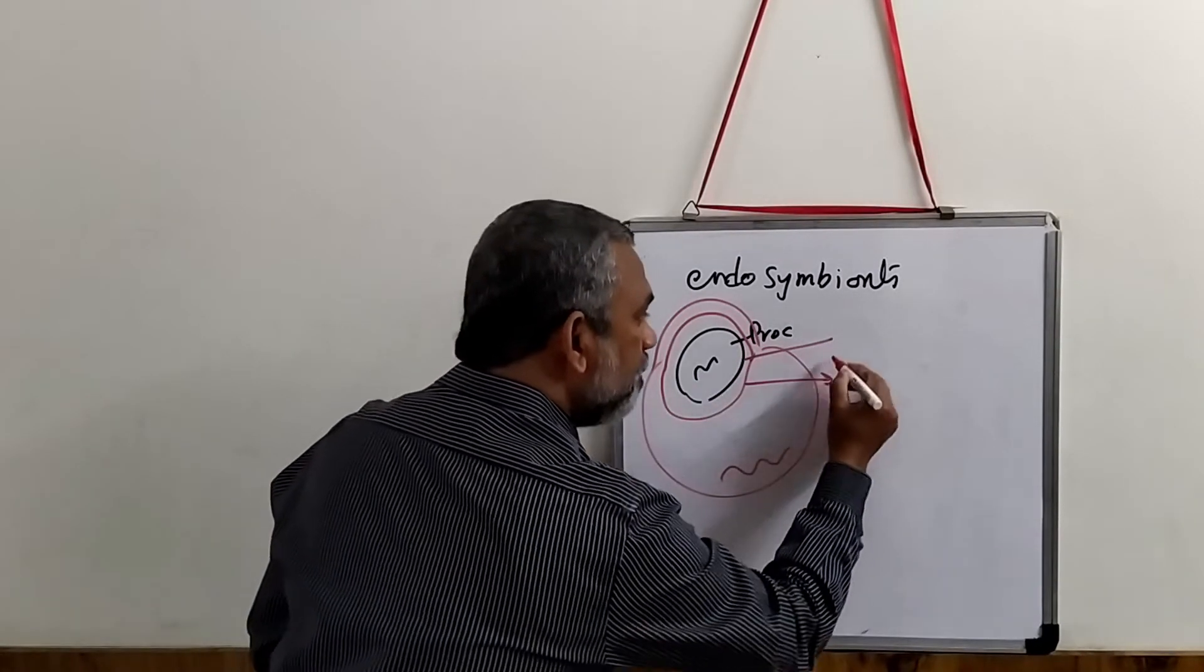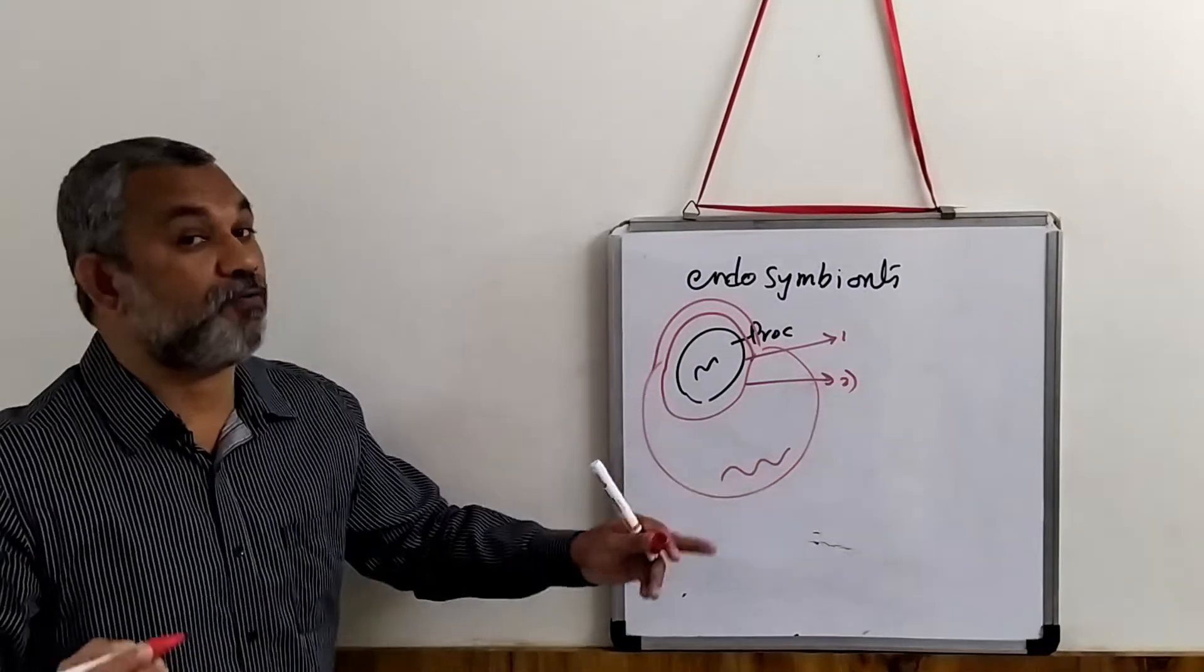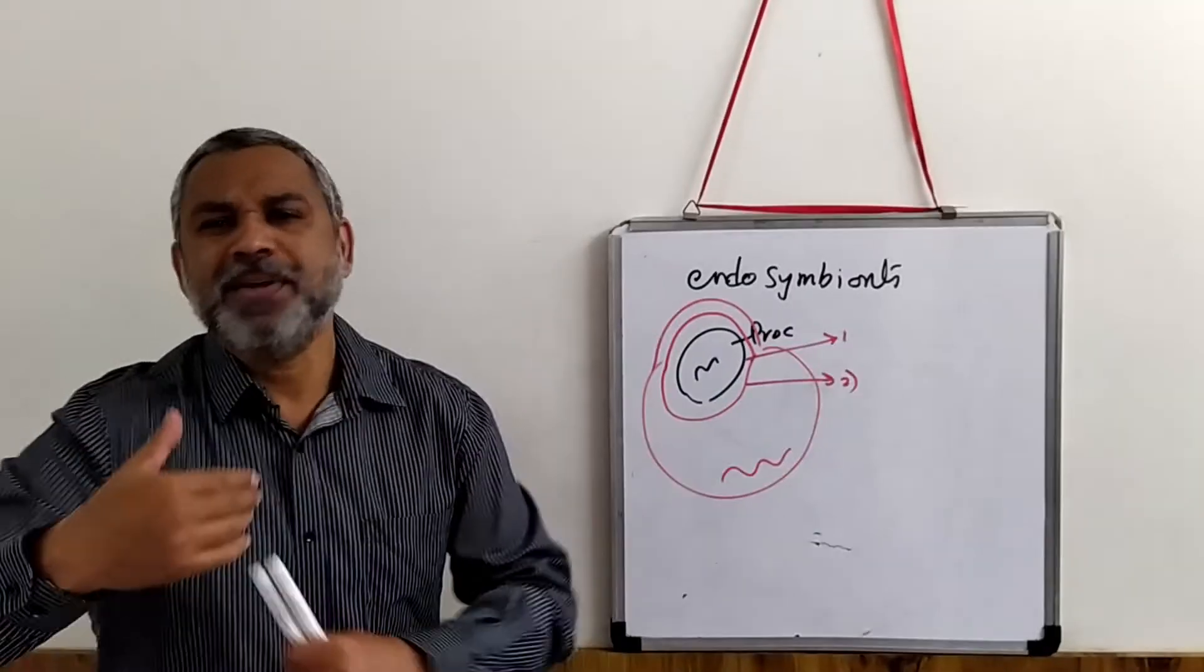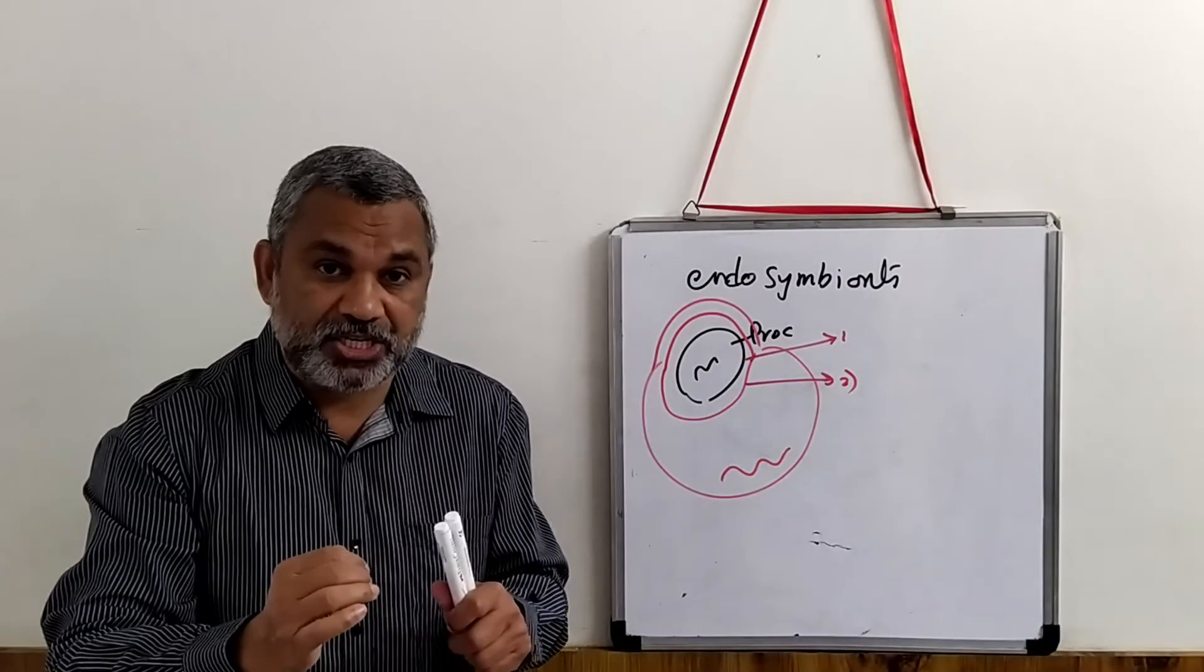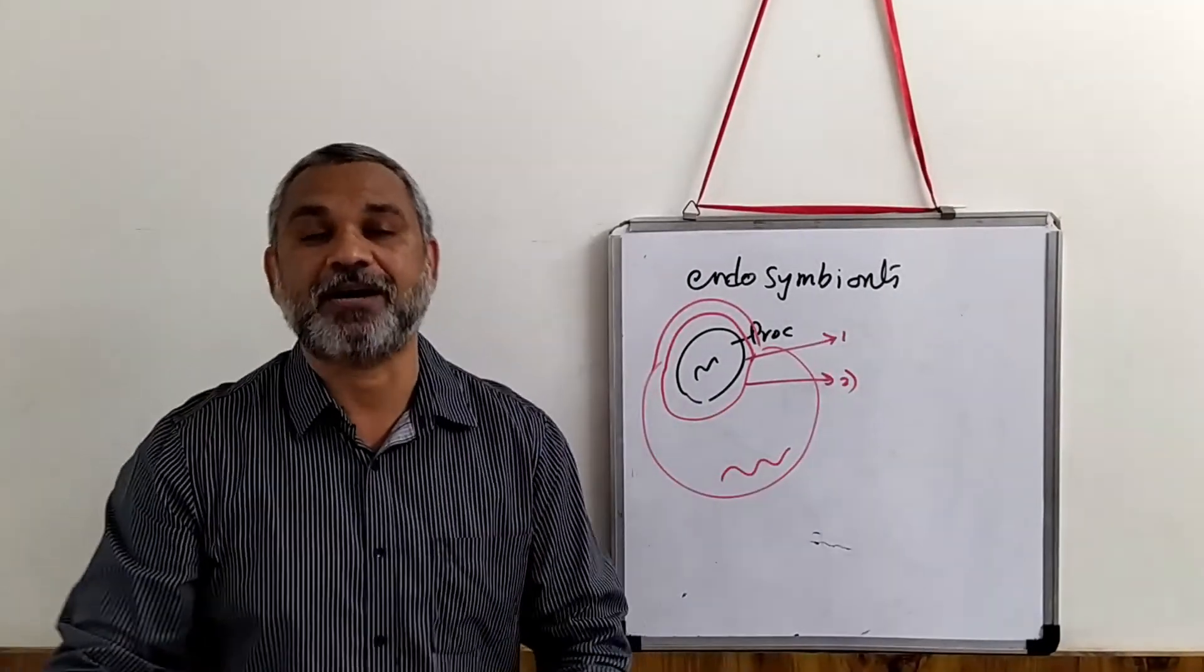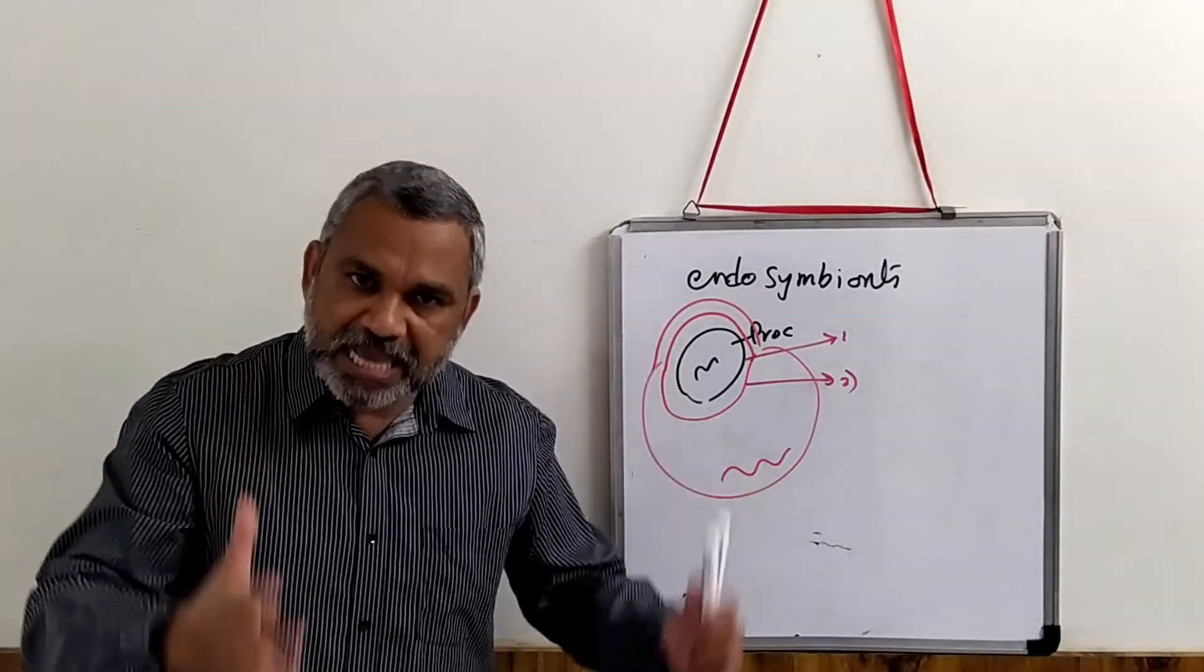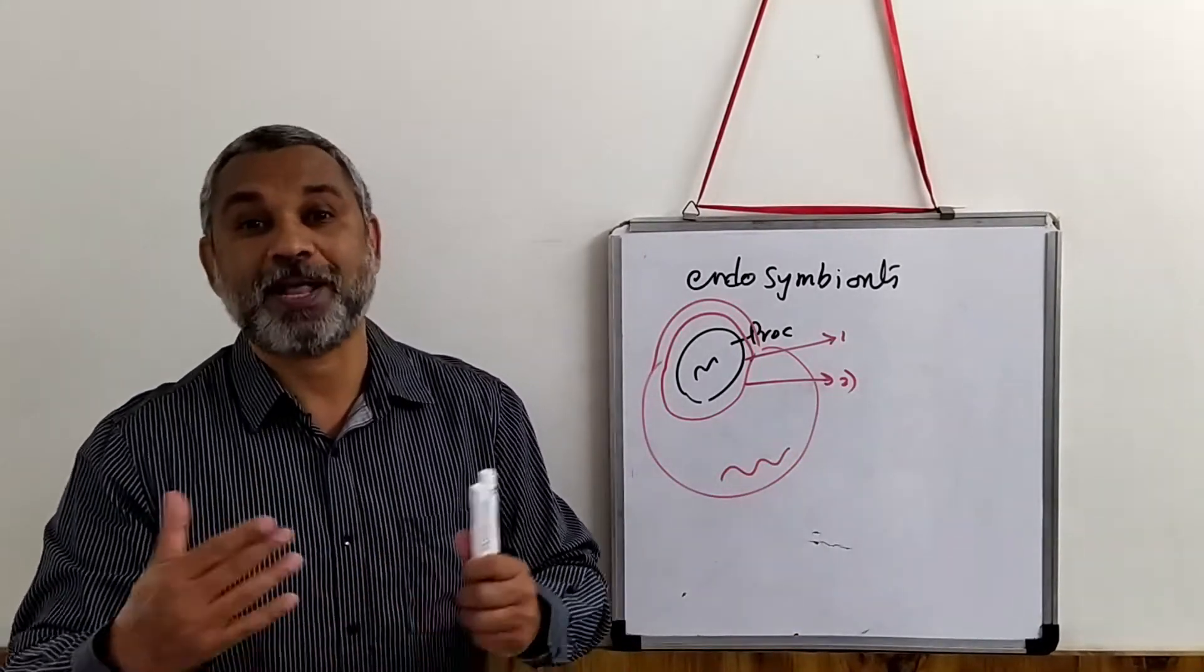So over millions of years, it is possible that this portion established its own identity that has ultimately got converted into a mitochondria. And this is the hypothesis that is proposed and which we believe today. And the same applies to chloroplasts as well.